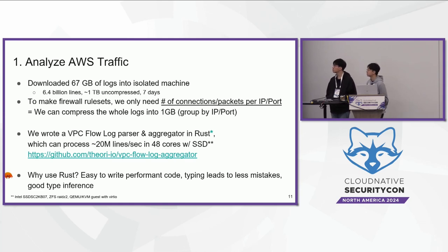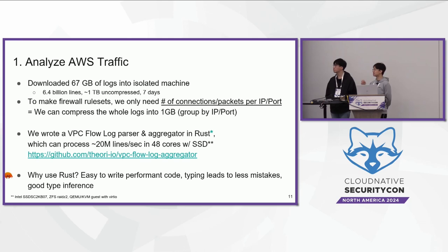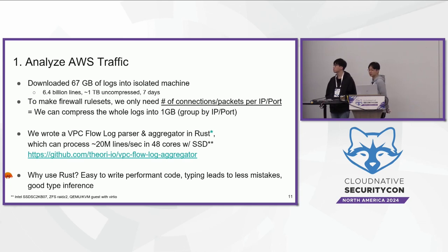We processed about 67 gigabytes of logs recorded over seven days. While 67 gigabytes might not sound like much, it is compressed — when decompressed it becomes around one terabyte, which is huge. By compressing the logs and grouping them by IP and port, we reduced the working size to one gigabyte. The VPC flow logs are text-based, so we needed to optimize them into data structures we could easily control and manipulate.